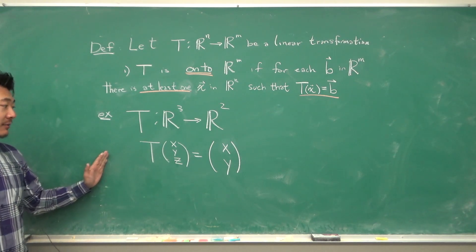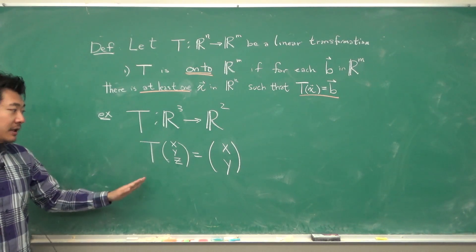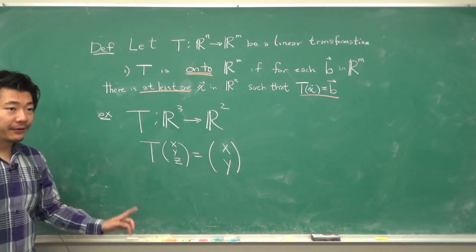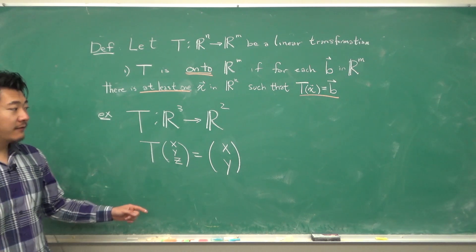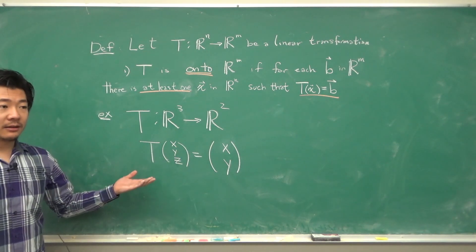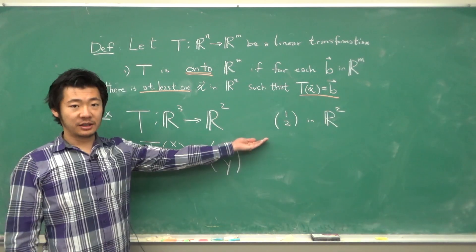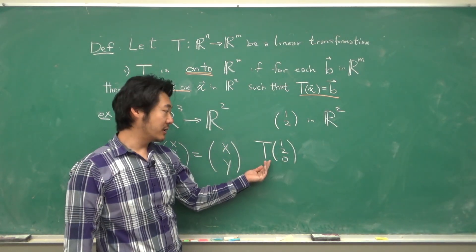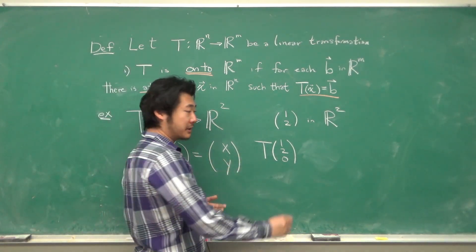For example, suppose we have a linear transformation mapping R3 to R2 such that T of the vector XYZ gets mapped to XY. This is certainly an onto transformation, because given any vector in R2, we can find a vector in R3 which maps to it. For example, the image under the transformation of the vector (1, 2, 0) in R3 is just (1, 2).